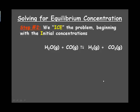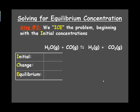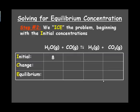Step two, we ICE the problem beginning with the initial concentration. So the initial concentration of water given in the problem was 8. The initial concentration of CO given in the problem was 6. And then again, we assumed no H2 or CO2 was present.